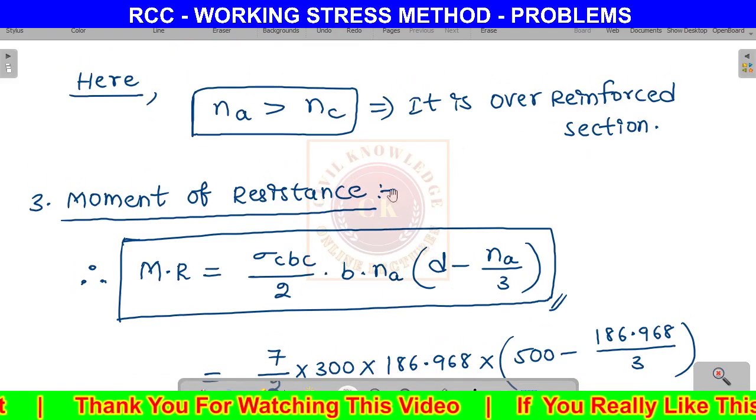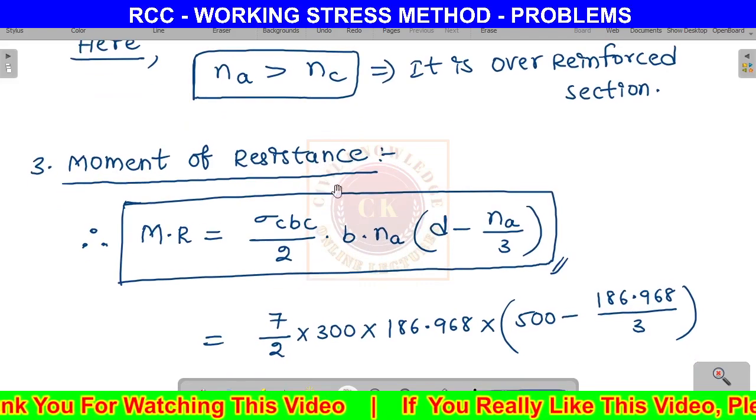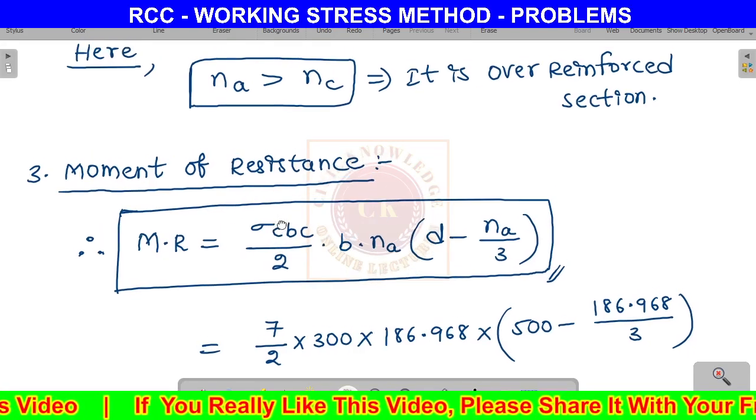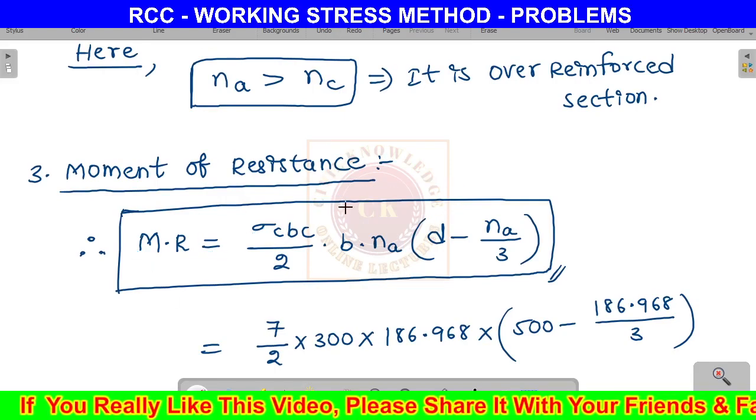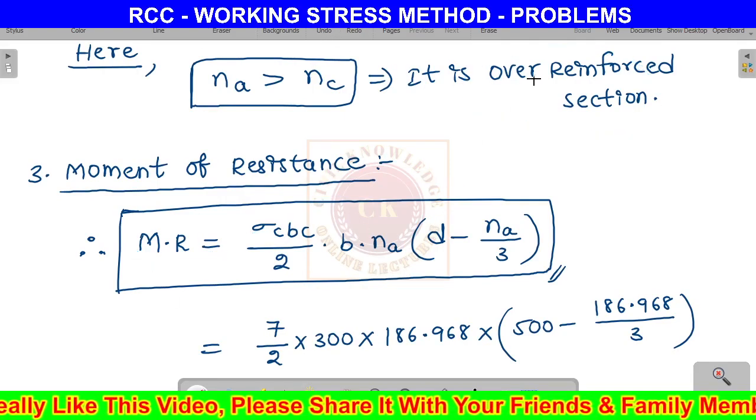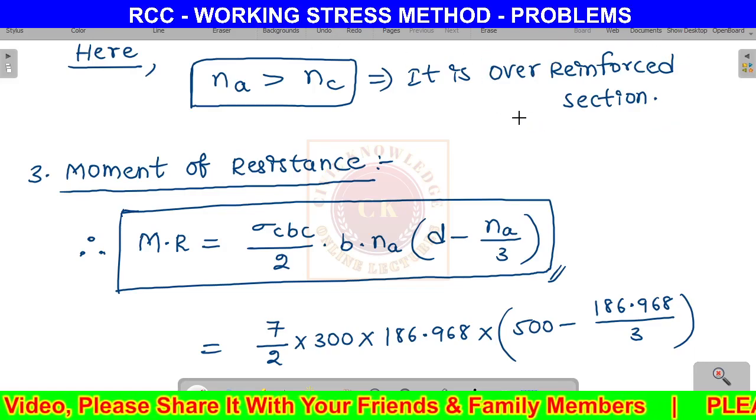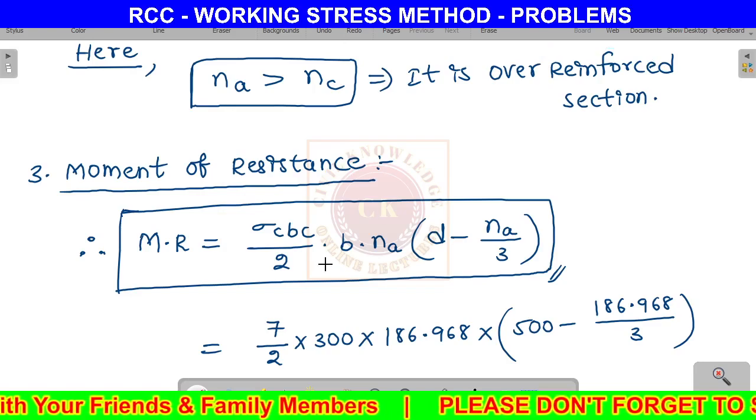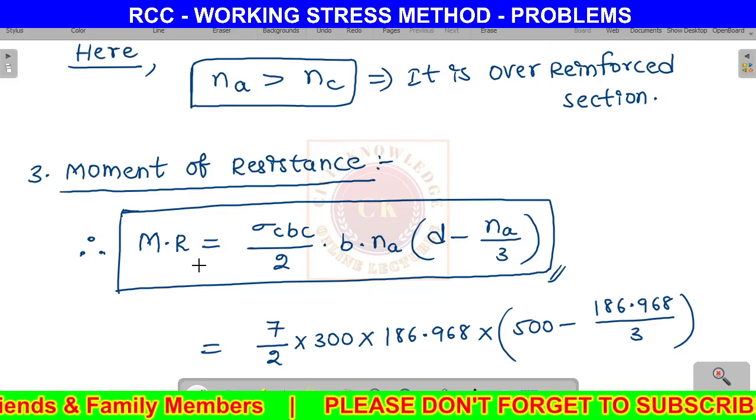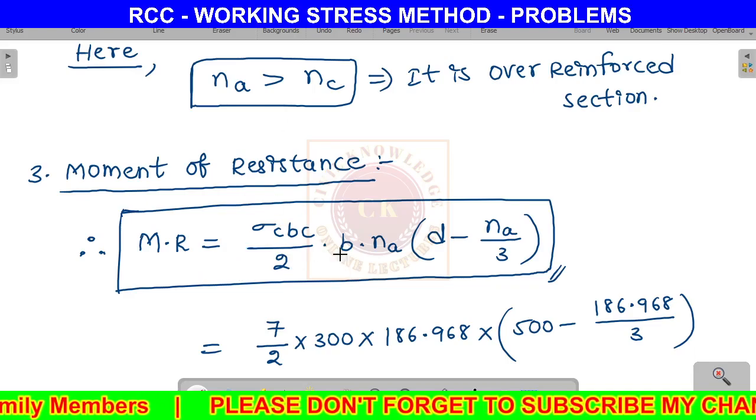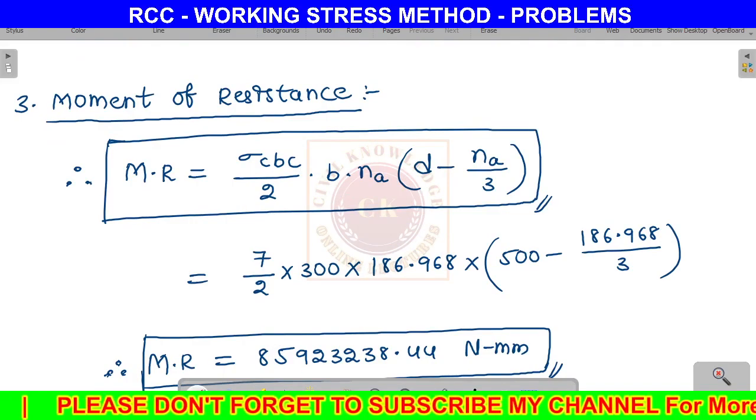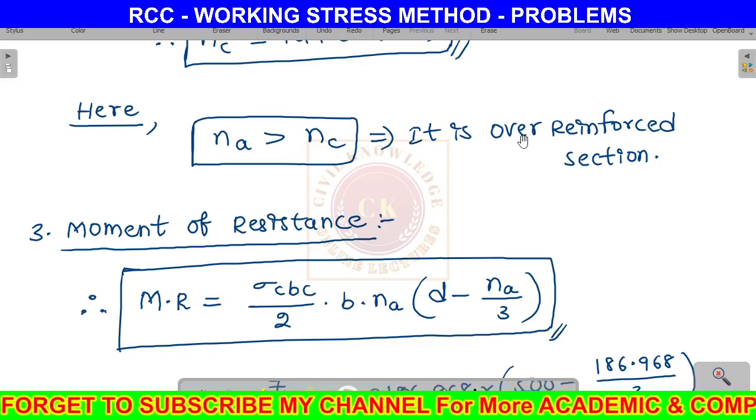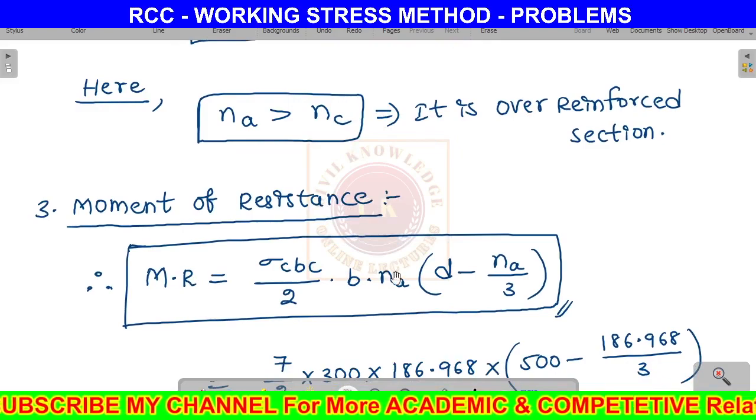Third and final step is moment of resistance. For an over-reinforced section, concrete reaches maximum stress first and concrete fails first. So we use the moment of resistance formula with respect to concrete. For under-reinforced section, steel fails first, so we use the formula with respect to steel.